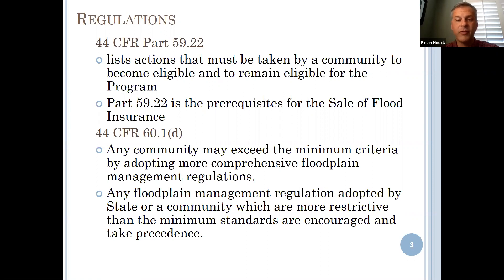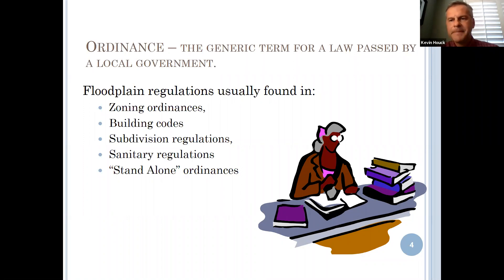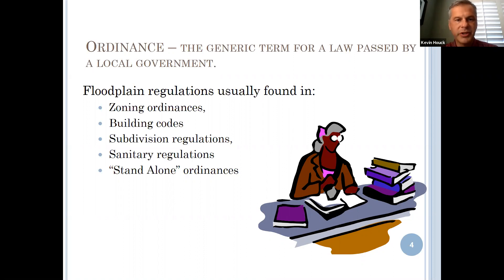The term 'ordinance' is the generic term for a law passed by a local government. Floodplain regulations can be found in a number of locations, and the whole reason this section exists is that there's no one way to administer a floodplain ordinance. FEMA requires that the community adopt and implement an ordinance, but nowhere does it say exactly how you have to do it — there just has to be some process sufficient to administer these regulations.